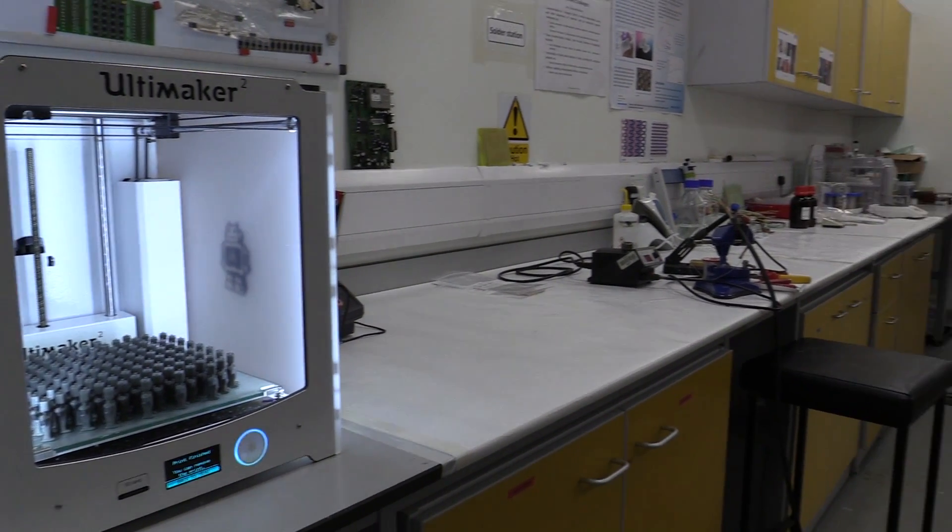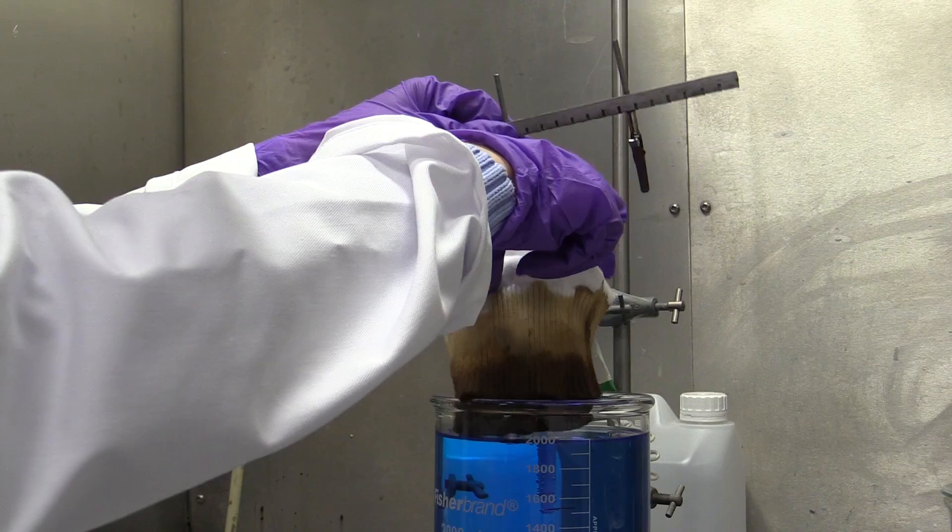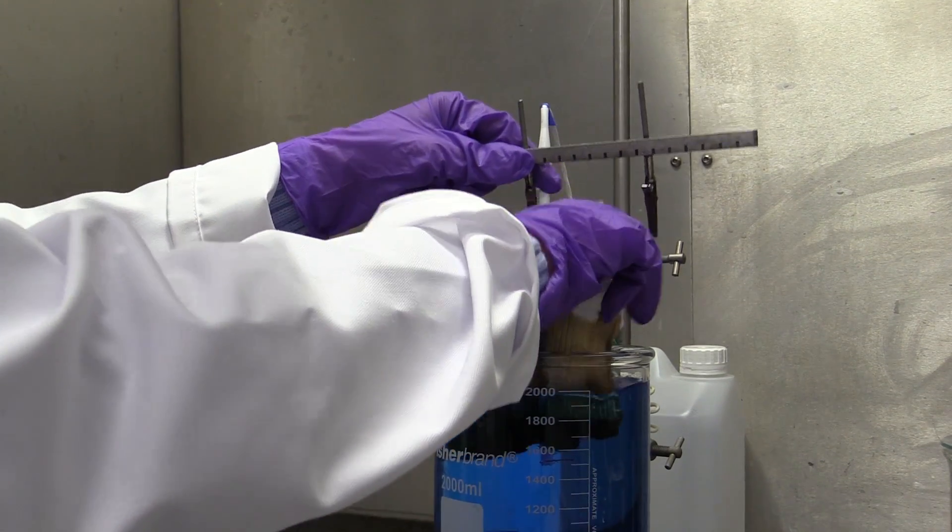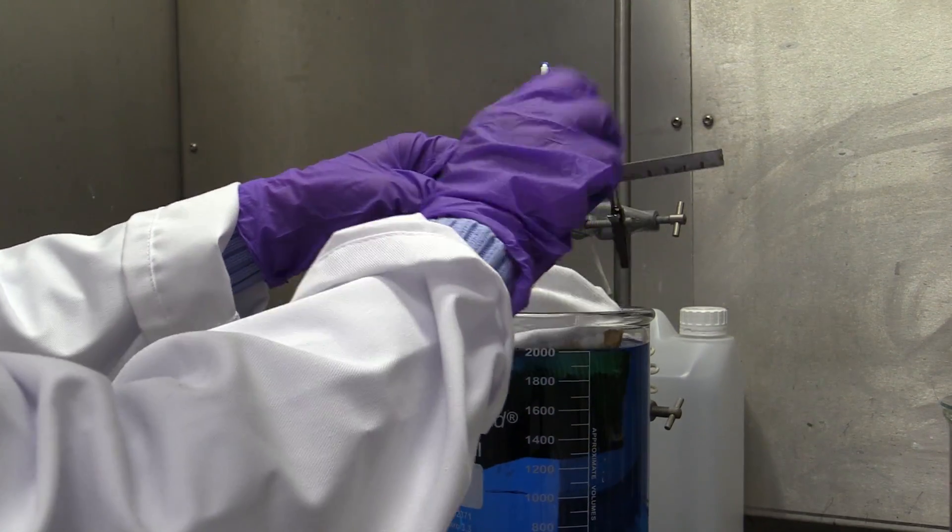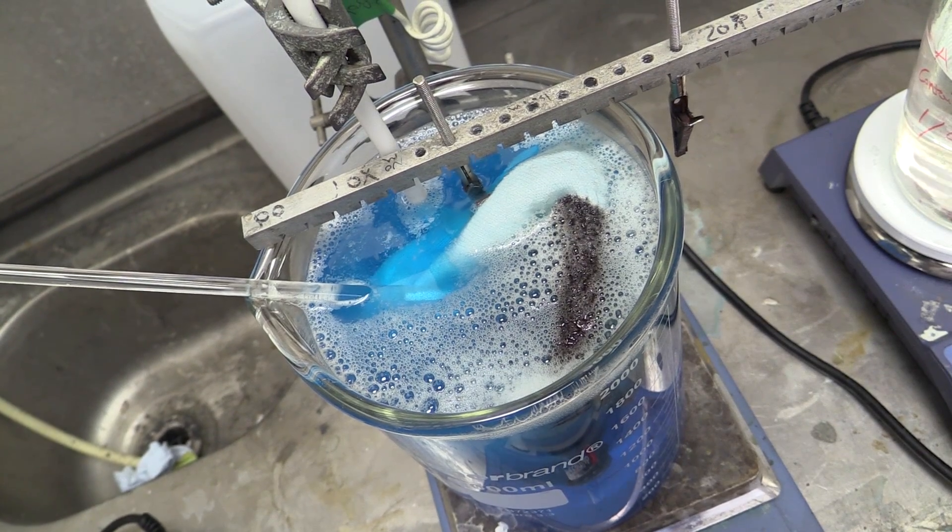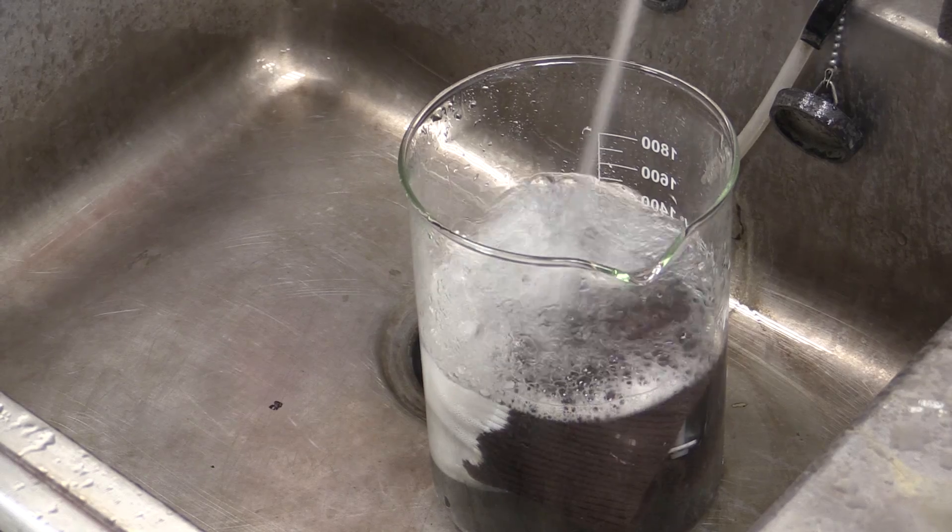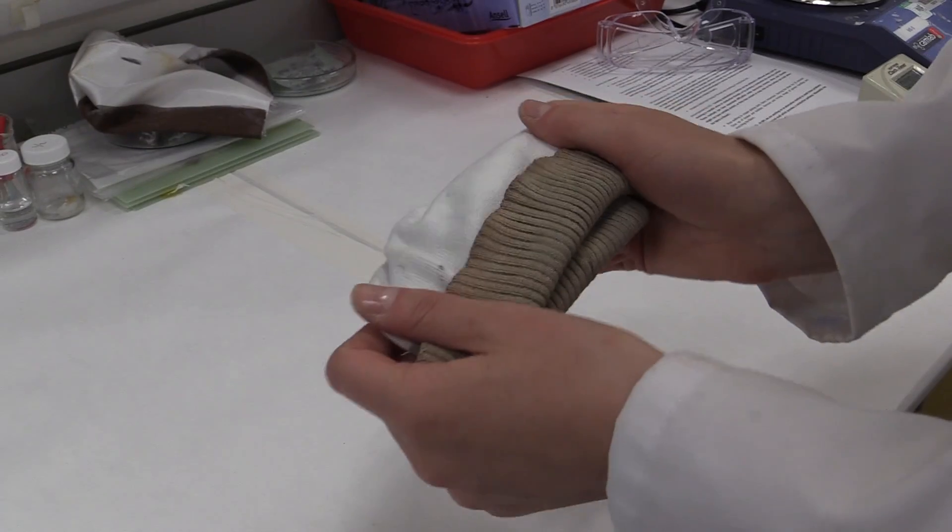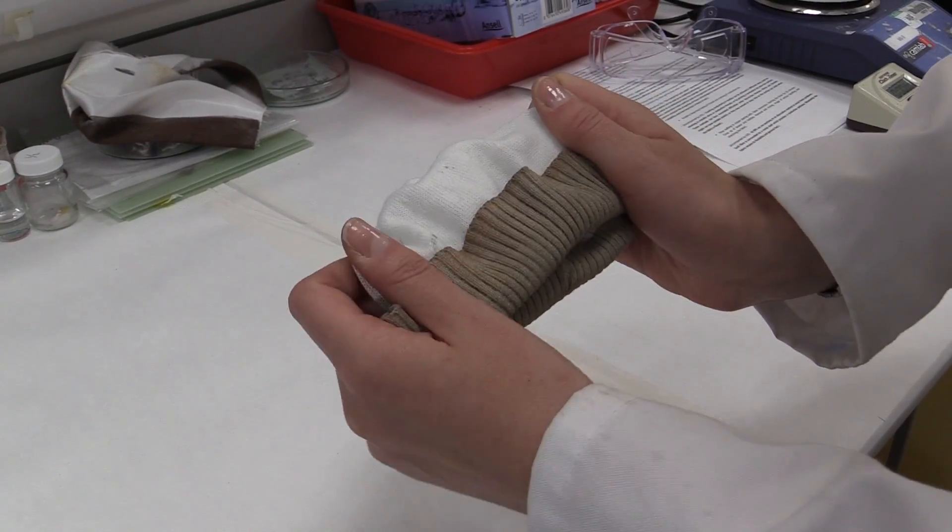At NPL, we are working on an alternative method to avoid these problems. Created via an immersion process, each fibre on the fabric is surrounded by a metal shell, which provides a conductive pathway. Meanwhile, the fabric retains its flexibility and general feel.